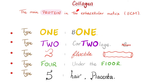So let's review collagen subtypes. Type 1 is in bone. Type 2 is in cartilage. Type 3 is very flexible — like blood vessels, with some wavy action. Type 4 is in the floor, the basement membrane. Type 5 is in hair, placenta, etc.